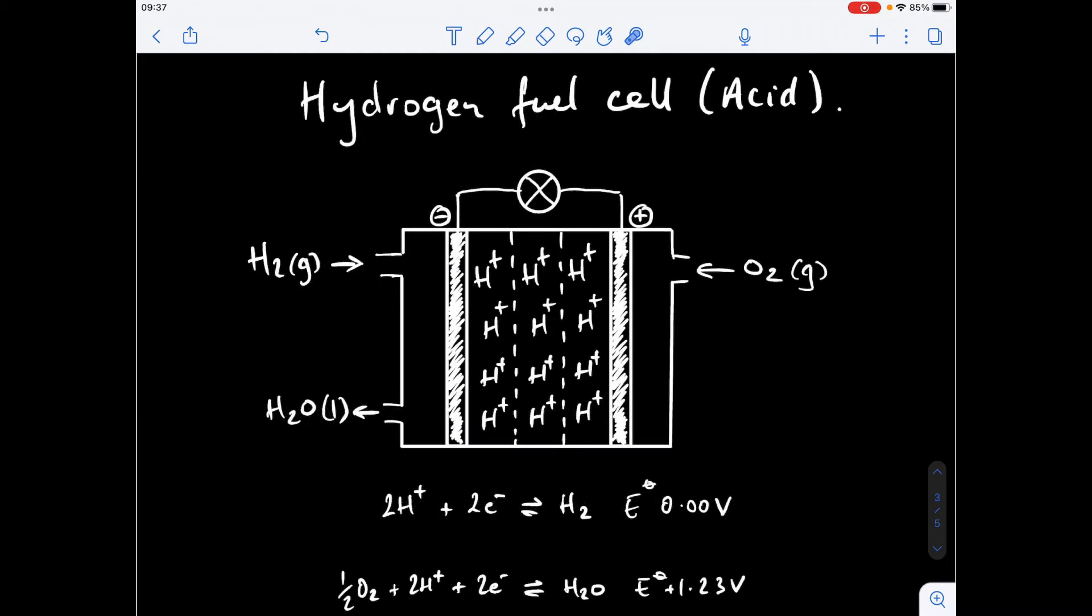We're going to focus on the hydrogen fuel cell for the purpose of the video. You'll notice I've got the word acid written up in brackets there and that's because there are two types of hydrogen fuel cell and it depends on the electrolyte that's within the cell. You'll notice all these H+ ions already in so this is the acid version of the hydrogen fuel cell.